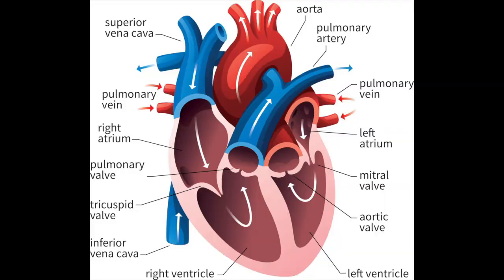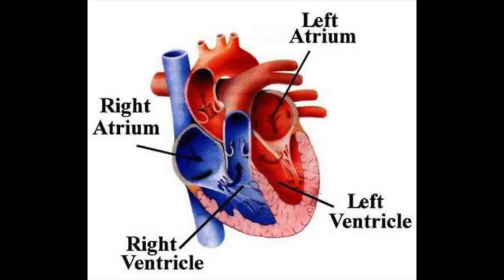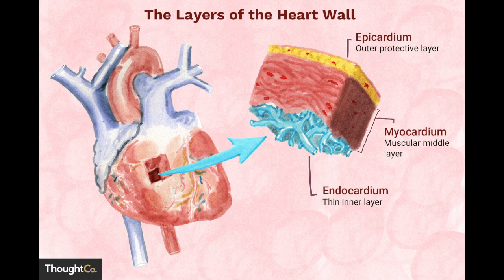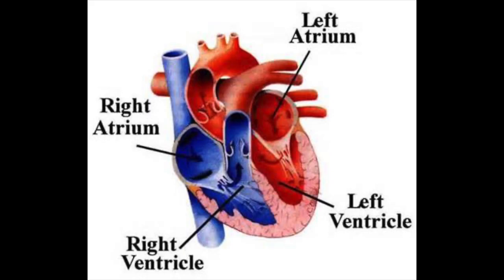Let's get into the anatomy of the heart. The internal cavity of the heart is divided into four chambers: the left ventricle, the right ventricle, the left atrium, and the right atrium. The two ventricles are responsible for pumping blood out of the heart. They are thicker than the two atria due to the extra amount of myocardium present, which is the muscular tissue of the heart.